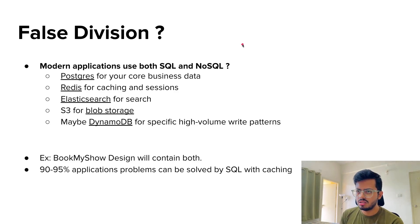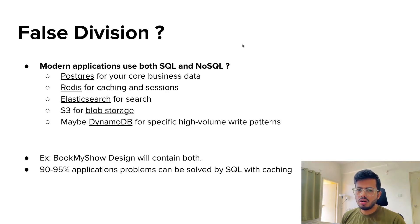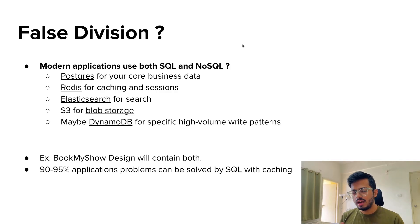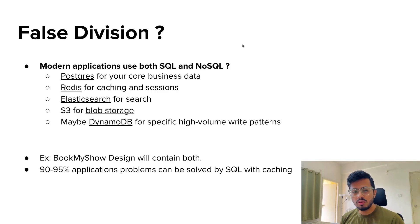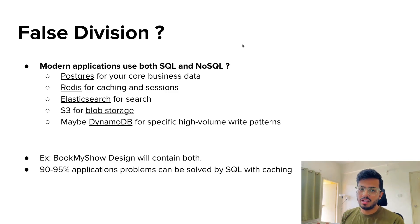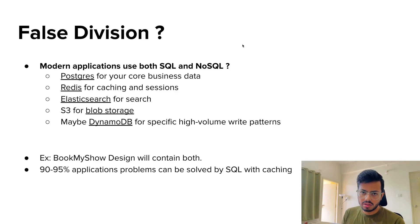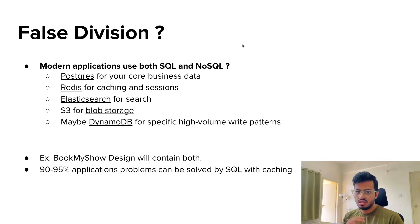A common false assumption is that a system should only rely on one type of database — that is quite wrong. In modern applications, we use both SQL and NoSQL. Postgres handles core business data and transactions. Redis handles caching and searching. Elasticsearch handles full-text search. S3 handles image and video storage. DynamoDB handles specific high-volume write patterns. For example, in a BookMyShow system design: transactions go through Postgres, searching through Redis and Elasticsearch with CDC between them, and storage through S3 for trailers and images.